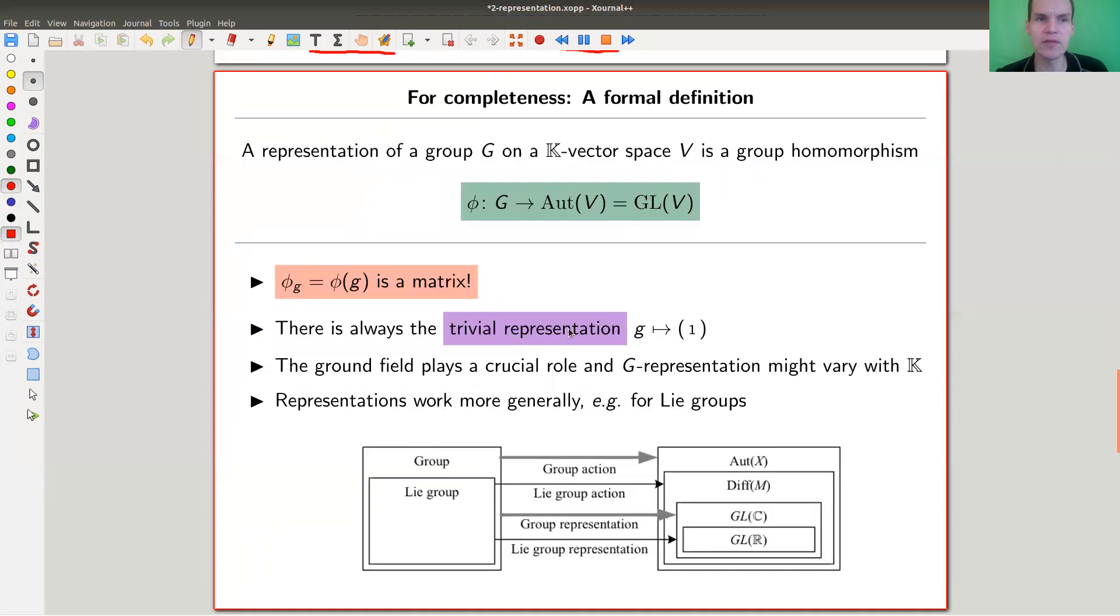Formally speaking, it works as follows. You just say a representation of a group on a vector space with a chosen ground field is just a group homomorphism from G to the general linear group of this vector space, automorphisms of this vector space. This is just saying that you associate a matrix to each group element. That's just what it says.